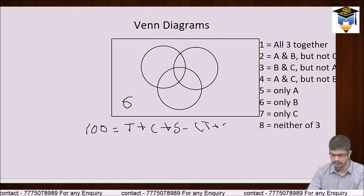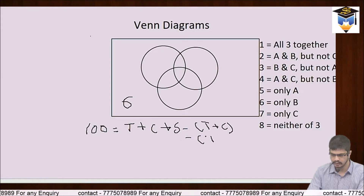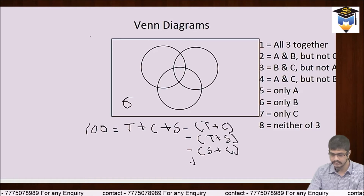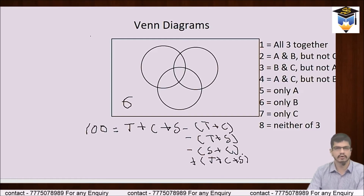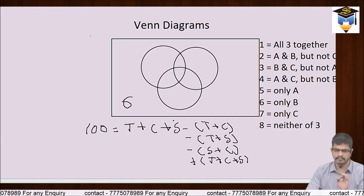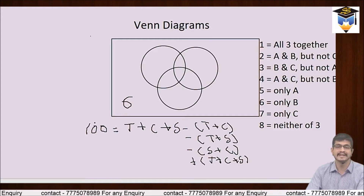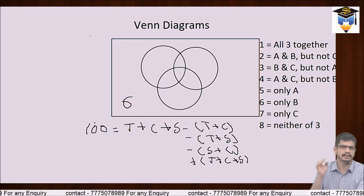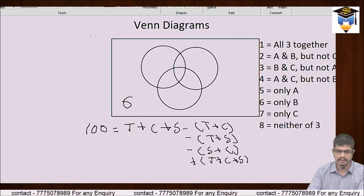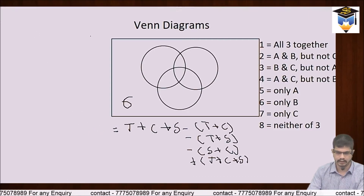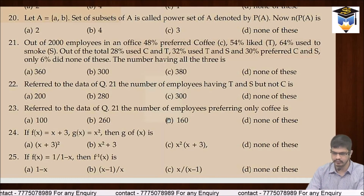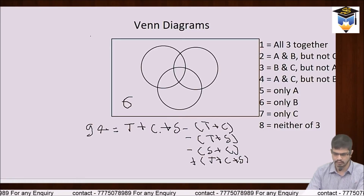100 ki jagah hum likhenge 94, kyunki 6% log kuch bhi pasand nahi karte — unhe exclude karna hai. So 94 = 48 + 54 + 64 minus tea ∩ coffee minus tea ∩ smoke minus smoke ∩ coffee plus n(tea ∩ coffee ∩ smoke).